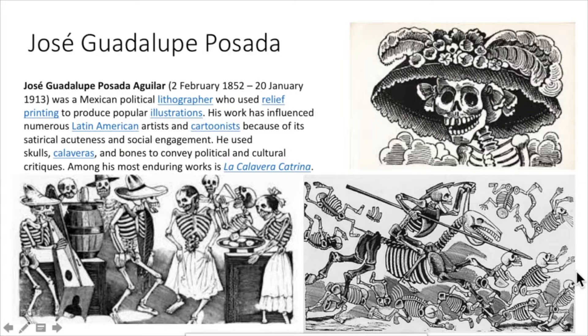This is José Guadalupe Posada. He was a Mexican political lithographer, which meant he used printmaking as his primary method of creating art. He would make what he called calaveras — which means skull — referring to skeletons that he would draw, engrave, and print doing everyday things. He created them as social commentary, and they're very cool. He has influenced a lot of other artists.